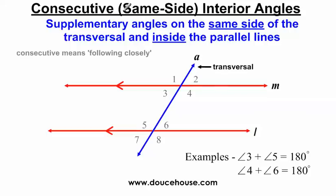Now we're going to do the consecutive interior angles, otherwise known as same-side interior angles. The definition my students write down: supplementary angles on the same side of the transversal and inside the parallel lines. The name gives you clues — same side means same side of the transversal, and interior means inside the parallel lines, just like the interior of a house is the inside.